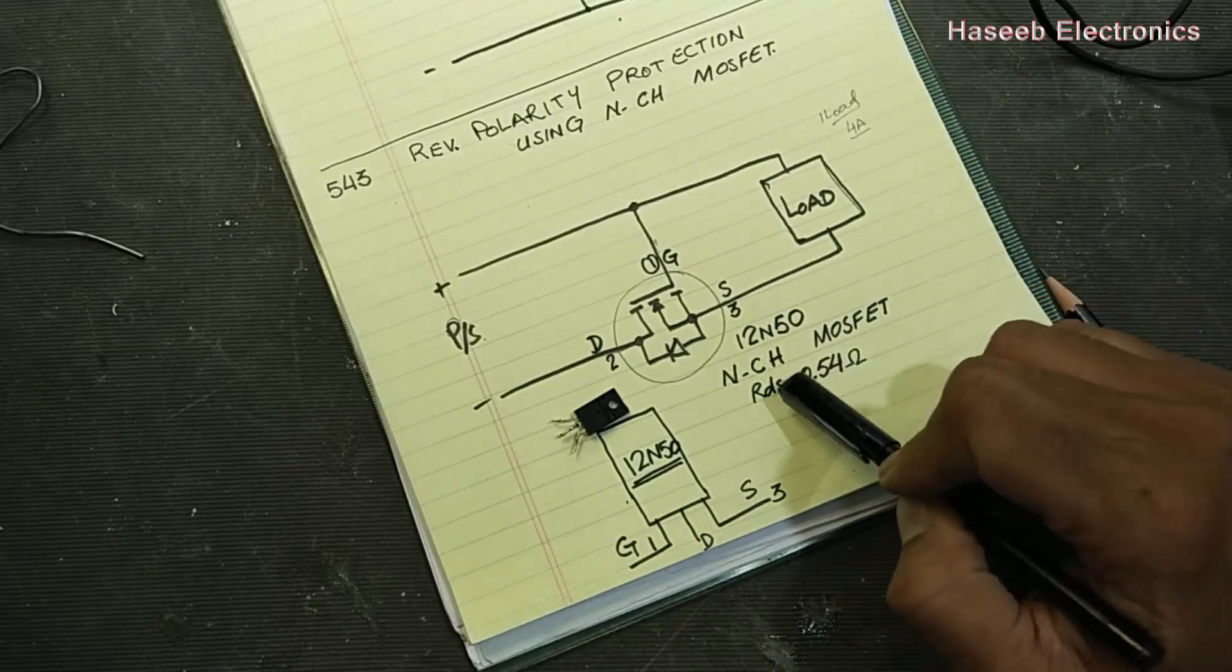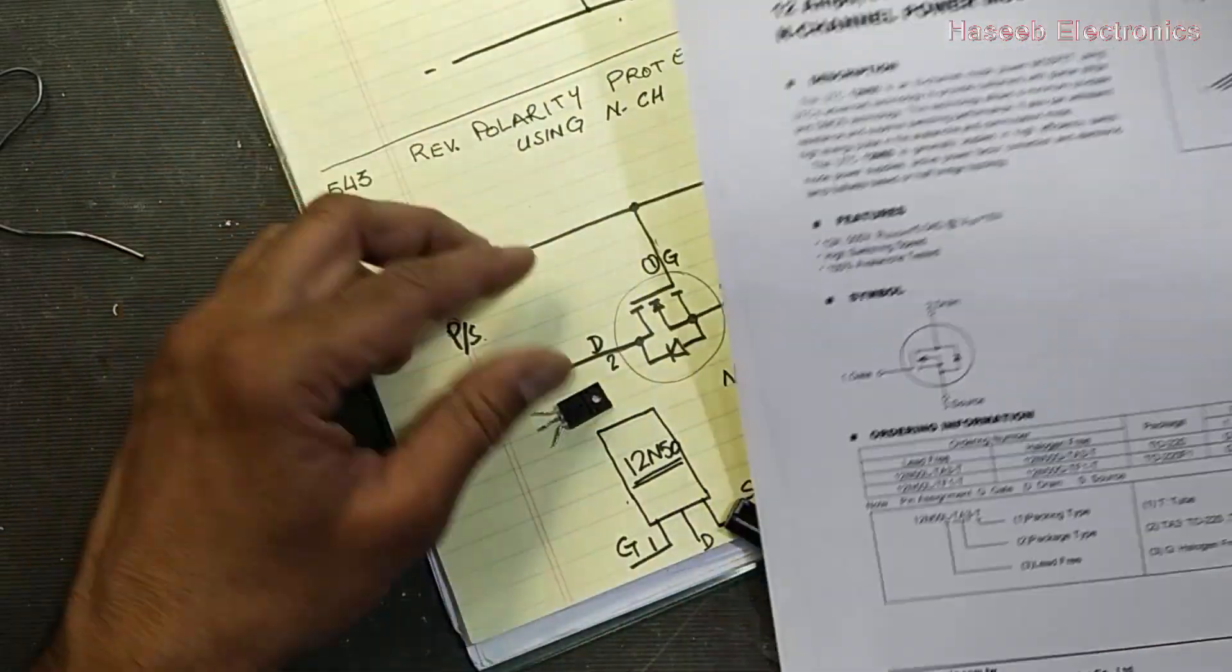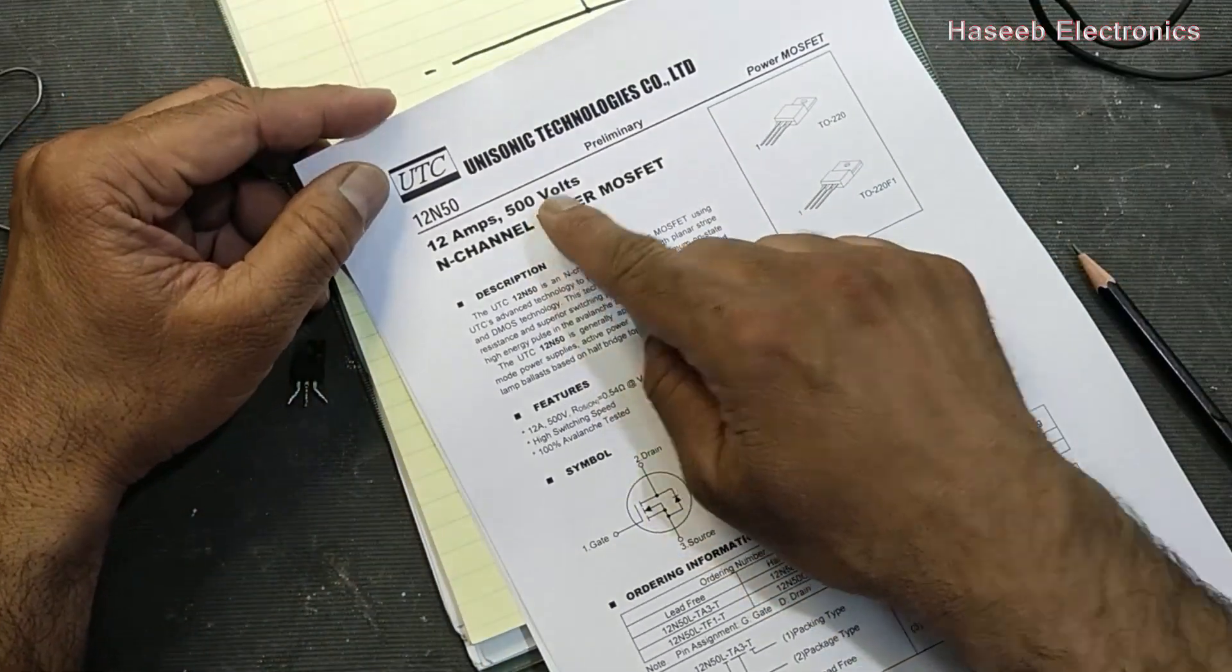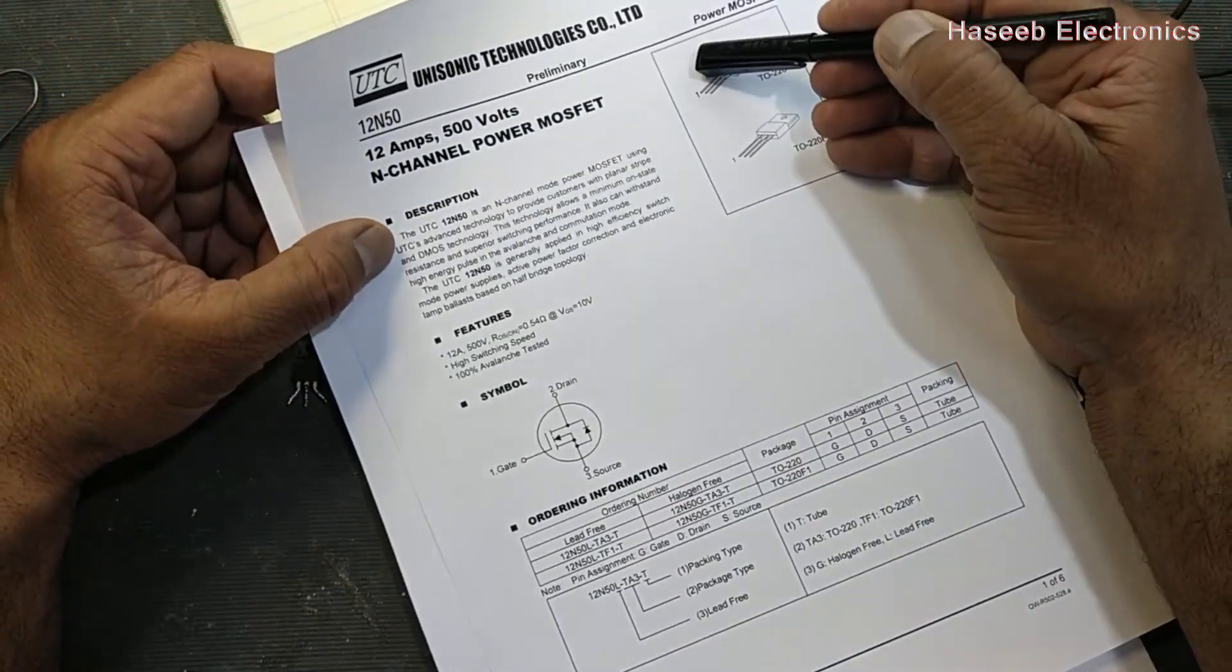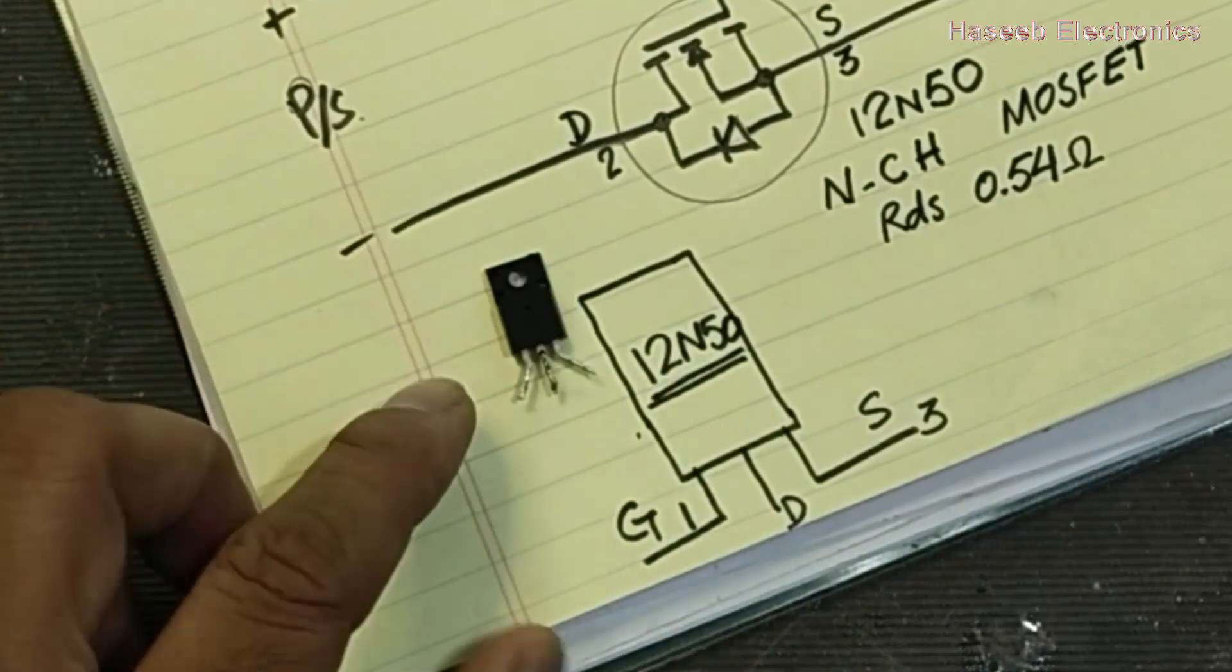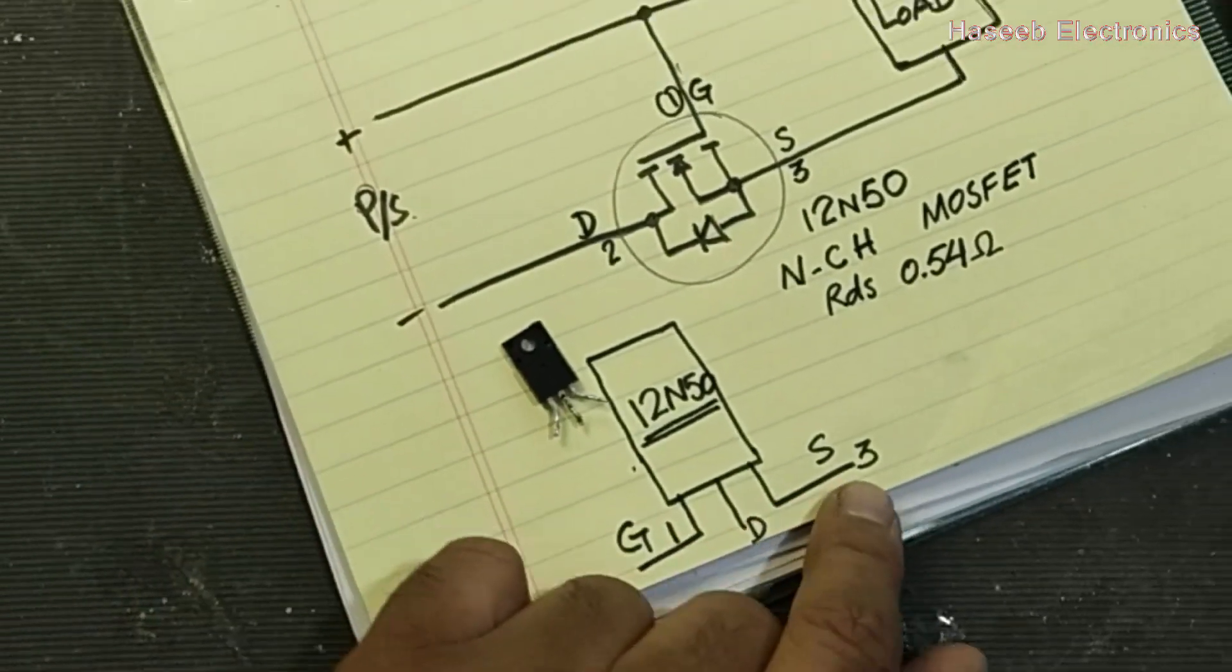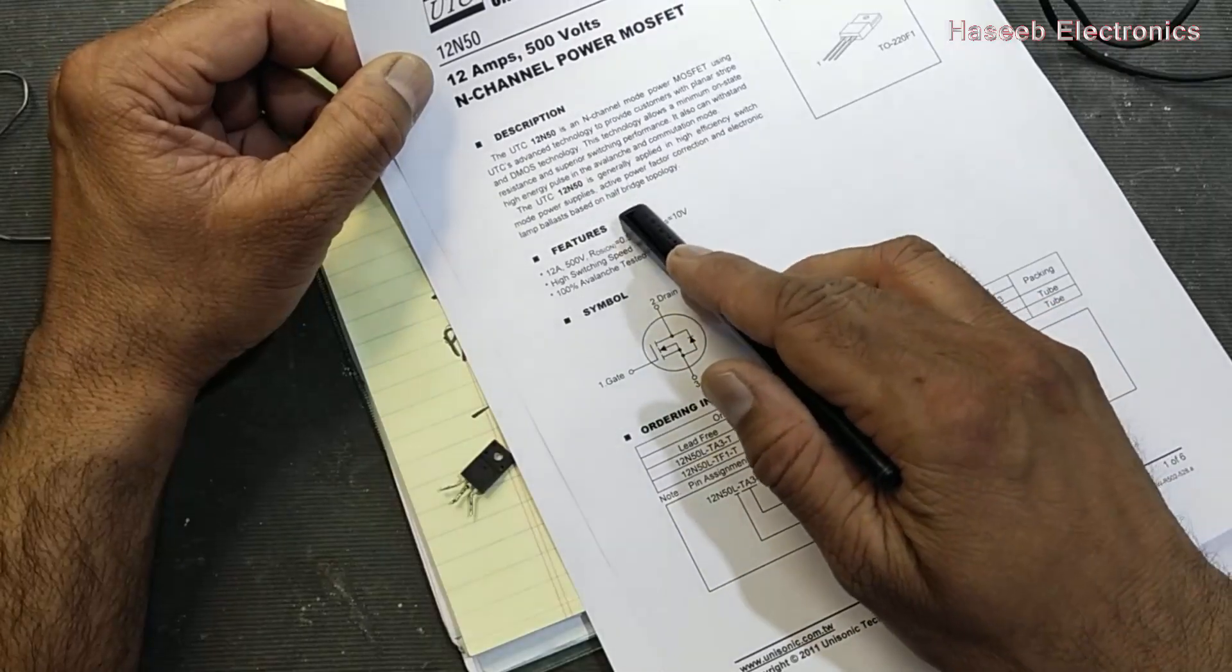It is a 12A50 MOSFET. It has 12 ampere, 500 volts, N-channel power MOSFET. So pin number one is at left side. If we place it in this way: gate, drain, and source. Its RDS(on) is 0.54 ohm.